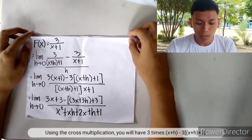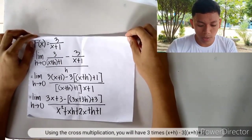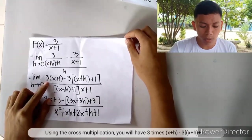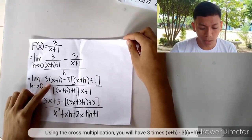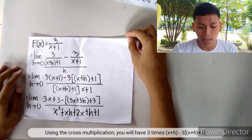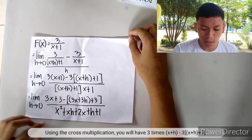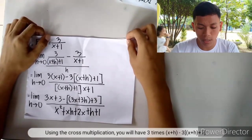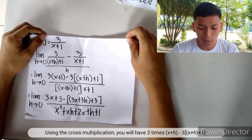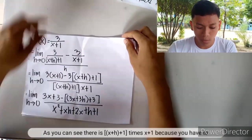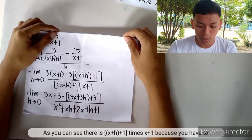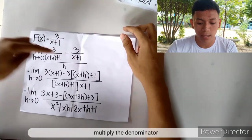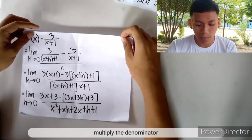Using cross multiplication, we will have 3(x+1) minus 3(x+h+1) over (x+h+1)(x+1) times h, because you have to multiply the denominators.